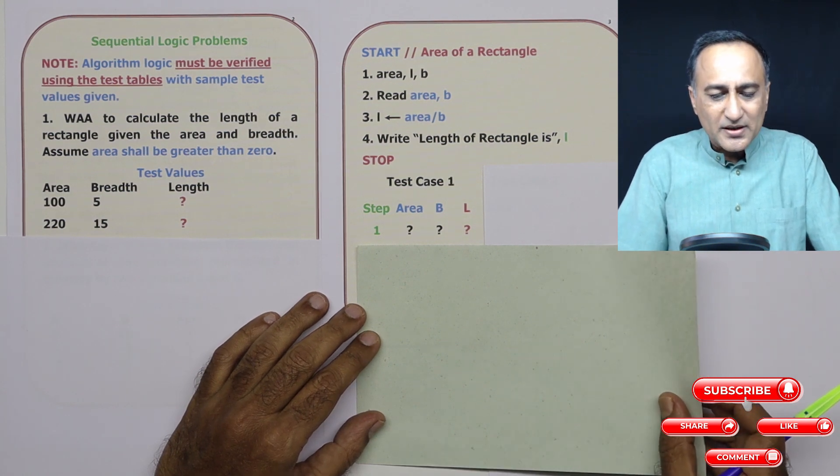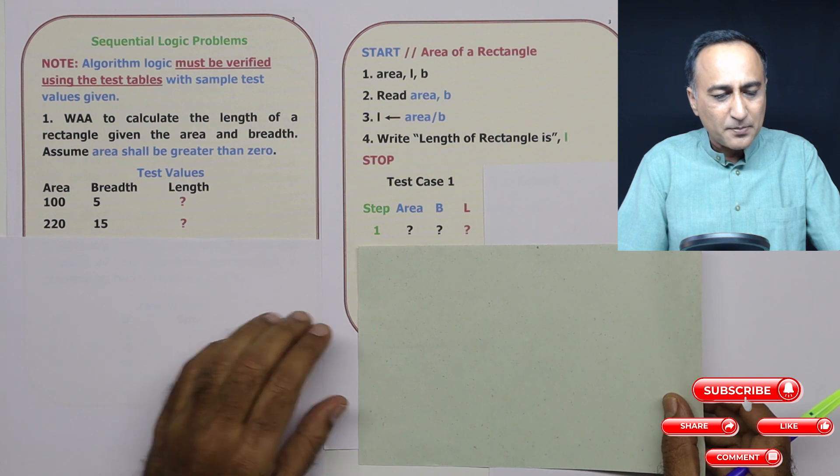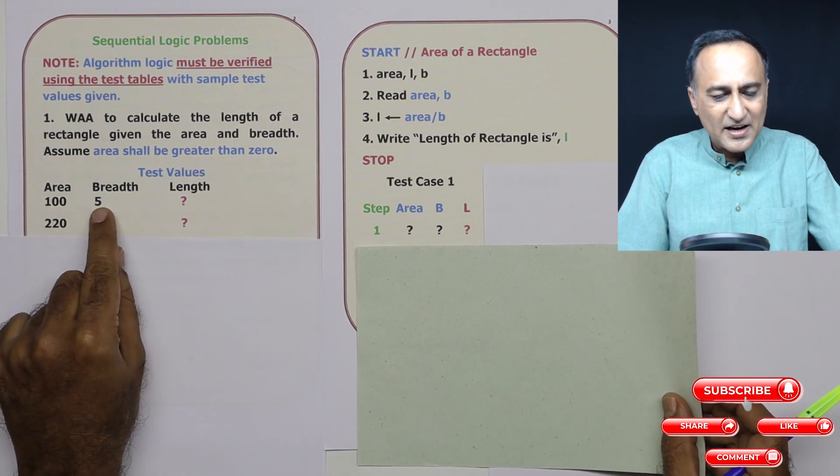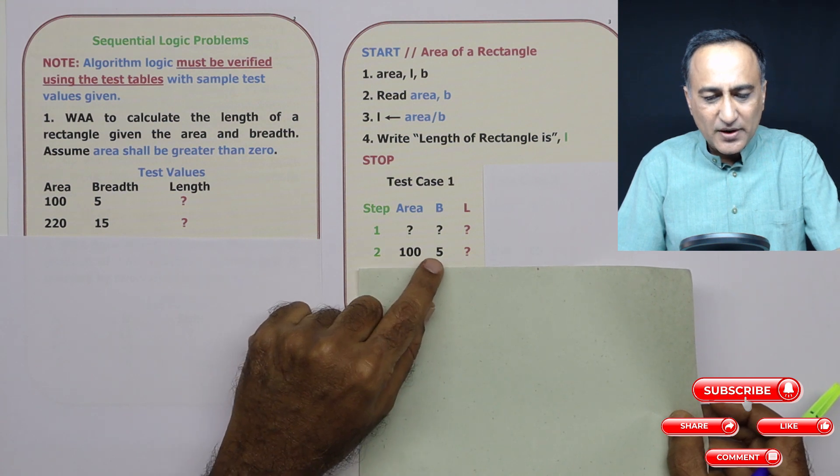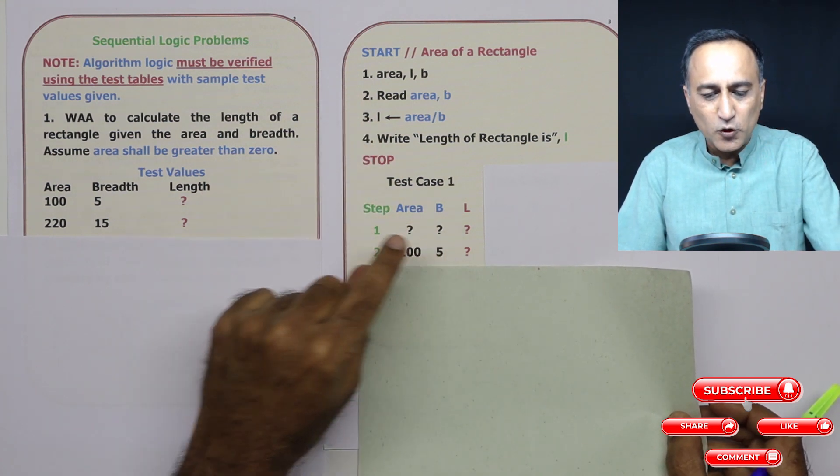Then I read area and breadth, reading 105. Area is 100, breadth is 5 at step two. The length is still unknown.